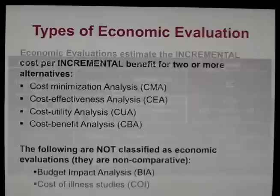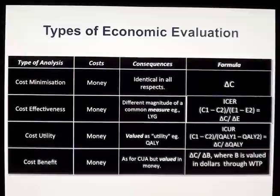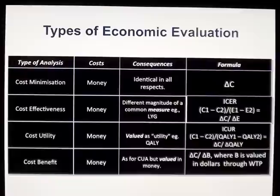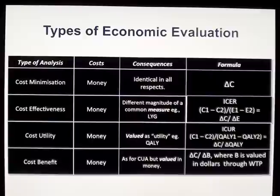For a cost-minimization analysis, we're looking at the delta C — the difference in cost between alternatives. We can only do a cost-minimization analysis when the consequences between those alternatives are identical in all respects. It's very rarely appropriate because it is very difficult to prove equivalence amongst the alternatives.